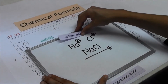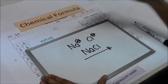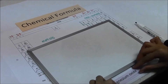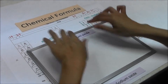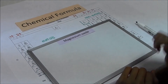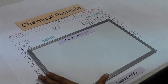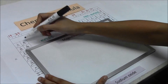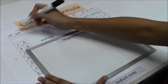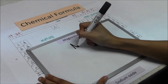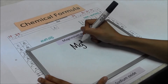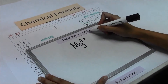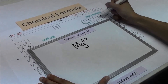Next example: magnesium oxide. Find magnesium on the periodic table and write down the working. Oxide comes from oxygen — find oxygen on the periodic table.